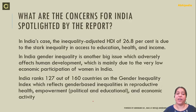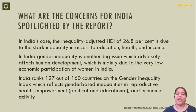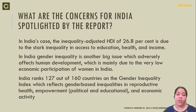The highlights of this report for India include: the Inequality Adjusted HDI loss of 26.8% is due to stark inequality in access to education, health, and income. Gender inequality is another big issue that adversely affects human development, mainly due to the very low economic participation of women in India. India ranks about 127 out of 160 countries on the Gender Inequality Index, reflecting gender-based inequalities in reproductive health, empowerment, political participation, and economic activity.